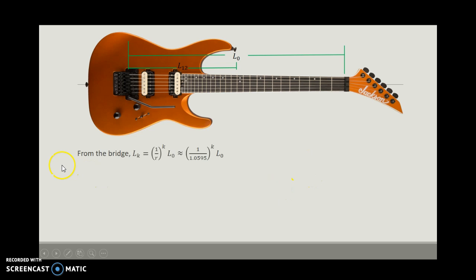In order to do that, we know that from the bridge, the distance from here to the kth fret, whichever fret we want that to be, would be 1 over r to the k times the length of the scale.